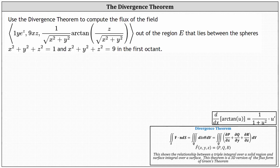The divergence theorem is stated below. To compute the flux, we want to compute the double integral over the surface S of F dot N dS, which equals a triple integral over the solid region Q of the divergence of the vector field F dV. This shows a relationship between a triple integral over a solid region and the surface integral over a surface. This theorem is a 3D version of the flux form of Green's theorem.